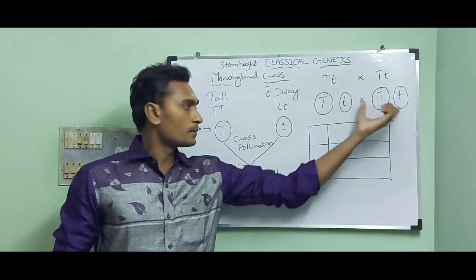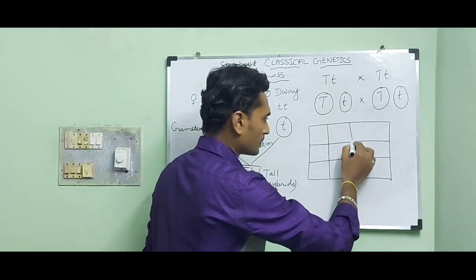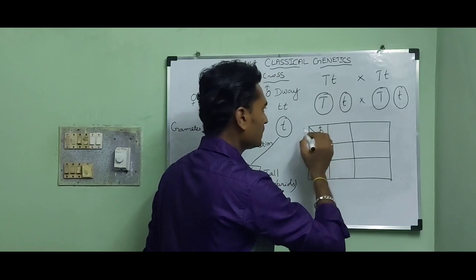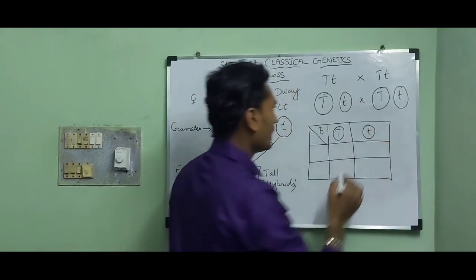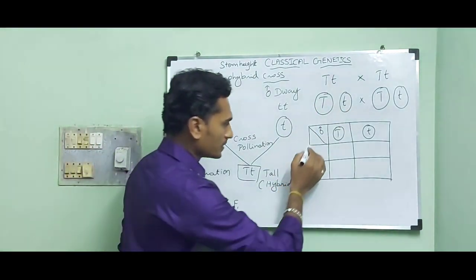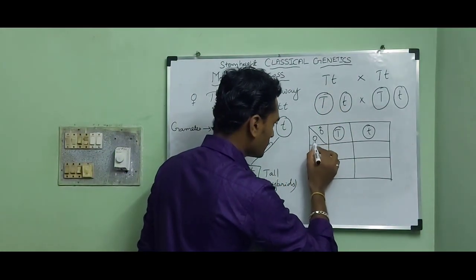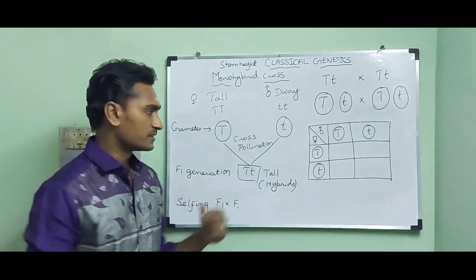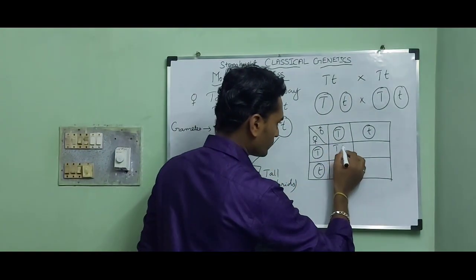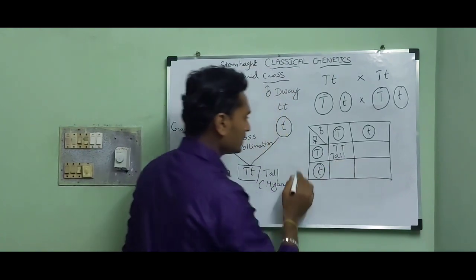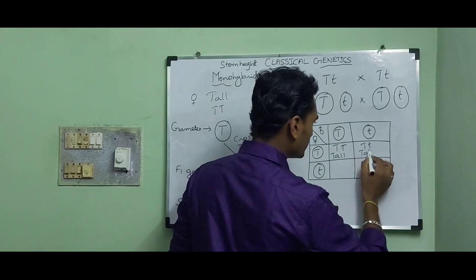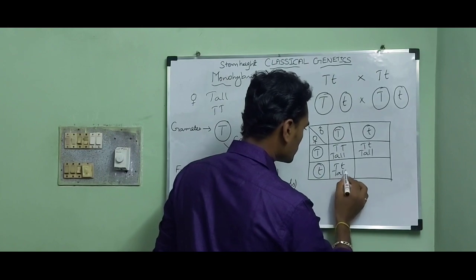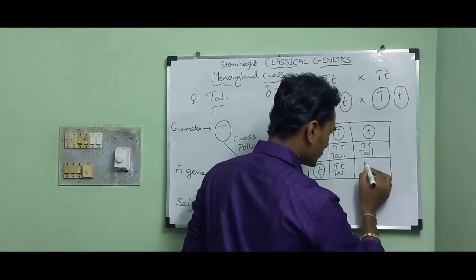The male gametes are plotted in the rows and the female gametes are plotted in the columns of a Punnett square. Fusion of gametes takes place: capital T with capital T forms homozygous tall, capital T with small t forms heterozygous tall, capital T with small t again forms heterozygous tall, and small t with small t forms dwarf offspring.